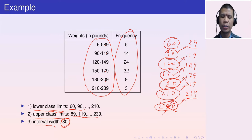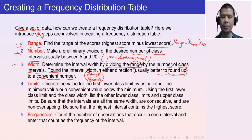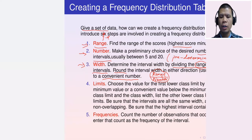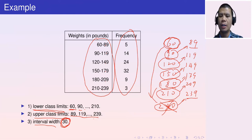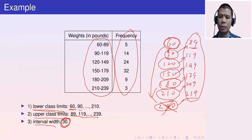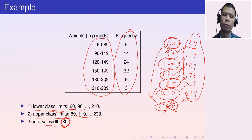To determine all class limits, it is key to know the interval width from step three, and then find the first lower class limit. We choose the first lower class limit as either the minimum value or a convenient value below the minimum — a value that is easy to remember or calculate, like multiples of 5, 10, or 20.